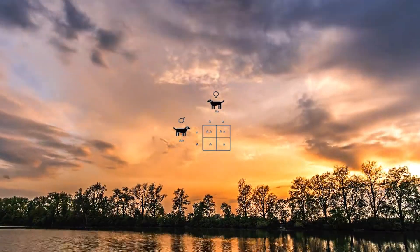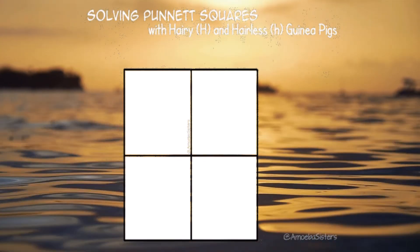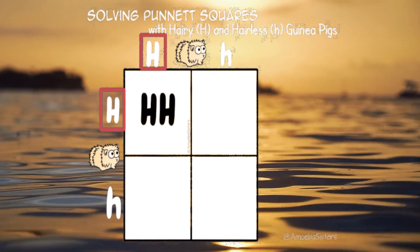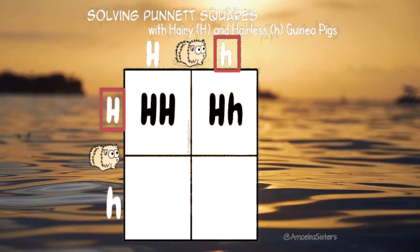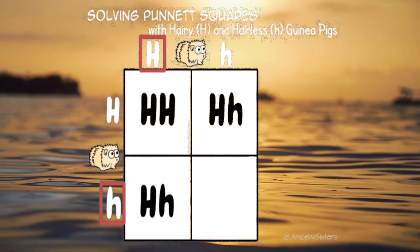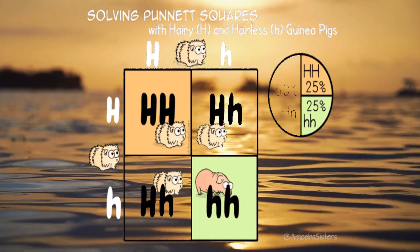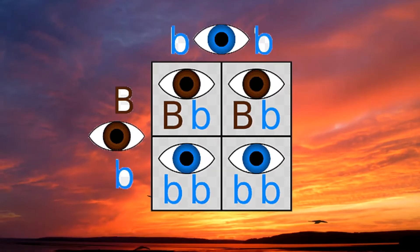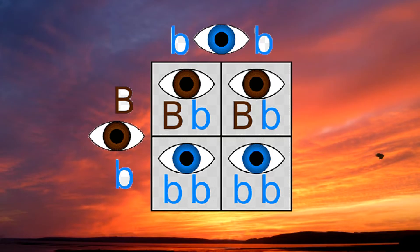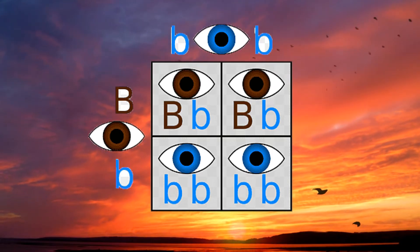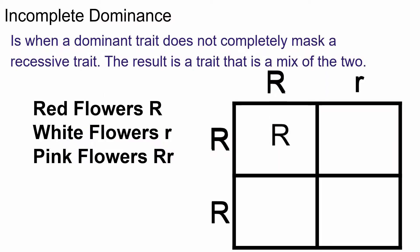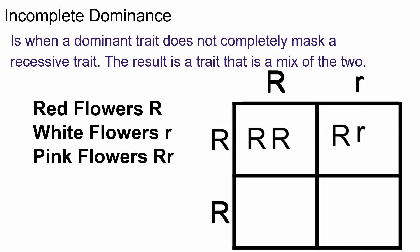We got Punnett squares to figure it out, the inheritance of traits — we'll shout it out loud! Punnett squares, they're the key to understanding genetics as easy as can be. From dominant to recessive, we can see how traits are inherited, it's a guarantee.